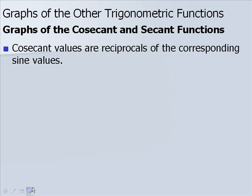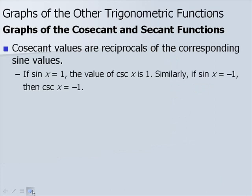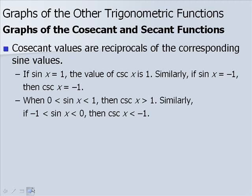Cosecant values are reciprocals of the corresponding sine values. If sine of x equals 1, then cosecant of x is 1. Similarly, if sine of x equals negative 1, cosecant of x equals negative 1, since the reciprocal of 1 and negative 1 is simply itself. But when sine is between 0 and 1, cosecant of x will be greater than 1. And if sine is between negative 1 and 0, cosecant of x will be less than negative 1.